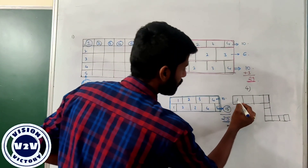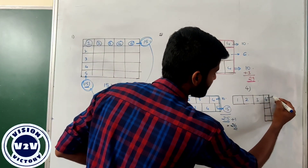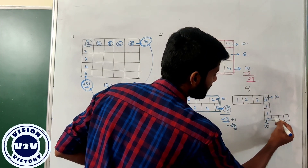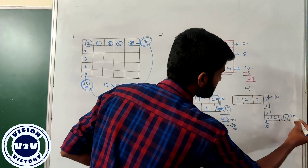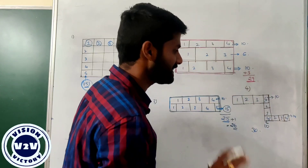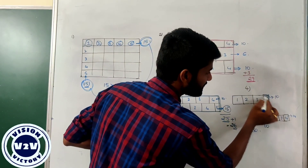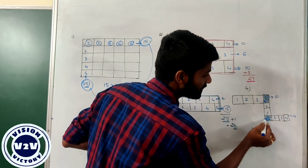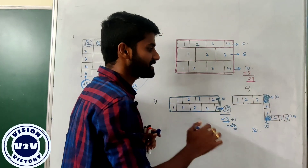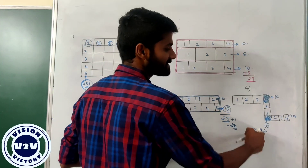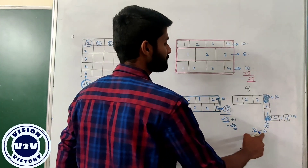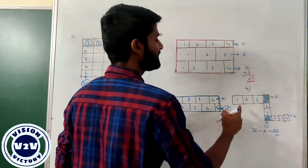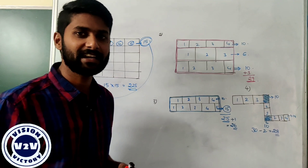For this question: one, two, three, four — the value becomes 10. One, two, three, four — the value becomes 10. Again: one, two, three, four — the value becomes 10. The total answer is 30. But here we have common intersections in the counting — those intersections are being added twice, so we subtract those two times. Subtracting: 30 minus two, the total number of rectangles in this figure is equal to 28.